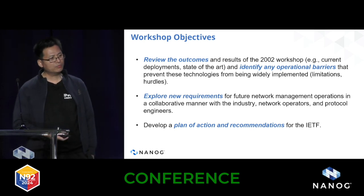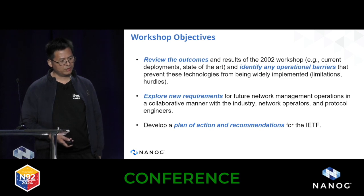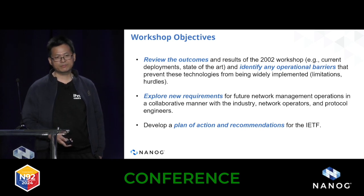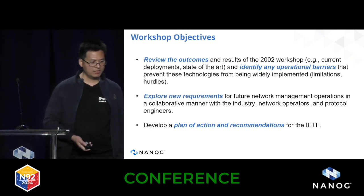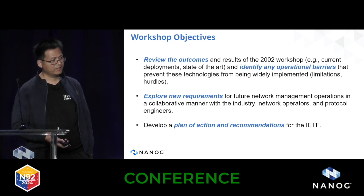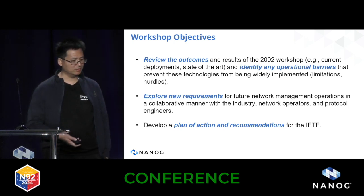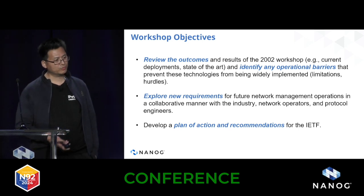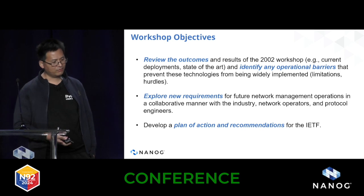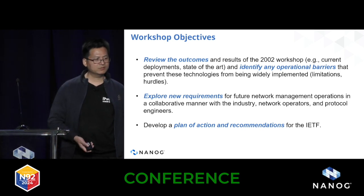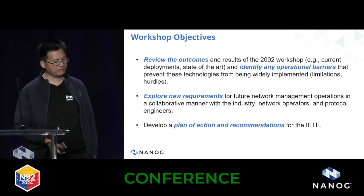For this workshop, we have three objectives. First, to review the outcomes of the first IAB workshop and identify operational barriers preventing wider deployment — for example, some operators raised a big concern about complexity of integration, noting it can take days or weeks to connect, aggregate, and correlate various types of data. Second, to explore new requirements for future network management operations — which requirements did operators miss, which remain unfulfilled — and then document these in a new IETF specification with a set of actions that work for both network operators and protocol developers.